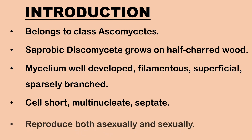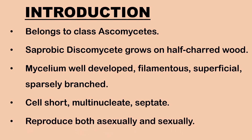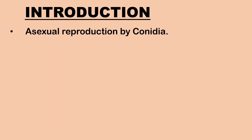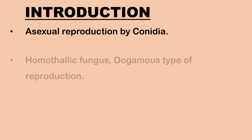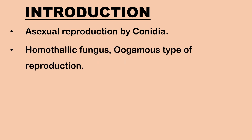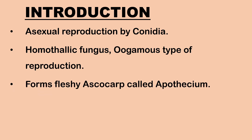Pyronema reproduces both asexually and sexually. Asexual reproduction may take place with the help of conidia. Pyronema is a homothalic fungus and sexual reproduction is of oogamous type. The most distinctive feature found in genus Pyronema is the formation of a saucer-shaped fleshy ascocarp known as apothecium.